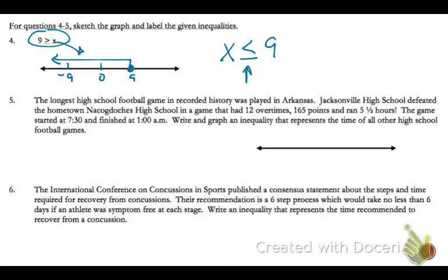On number 5, the longest high school football game in recorded history was played in Arkansas. Jacksonville High School defeated Nacogdoches High School in a game that had 12 overtimes, 165 points, and ran 5 and a half hours. The game started at 7:30 and finished at 1 a.m. We need to write and graph an inequality that represents the time of all the other high school football games. There were lots of numbers given in this problem, but all we need to focus on is the time.